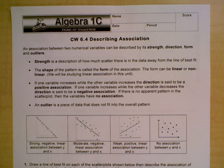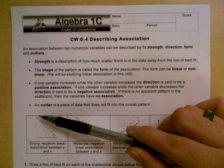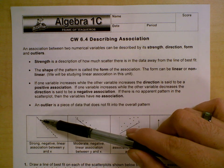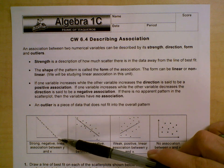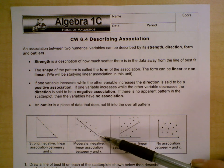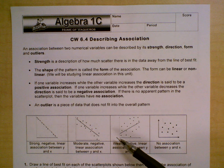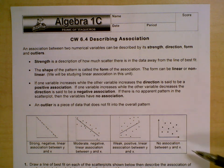The next thing we have to look at is the shape. The shape of the pattern is called the form of the association. The form can be linear or nonlinear. We'll be studying linear associations in this unit. So once again, we can say that this has a linear shape or a linear form because it forms the pattern of a line. Forms the pattern of a line, so it's linear. Once again, no association, it doesn't form a line, it's very scattered.